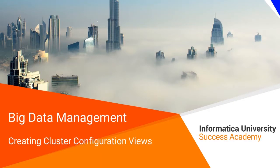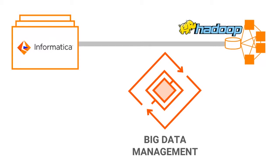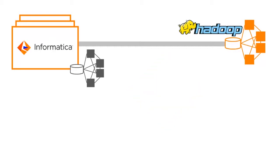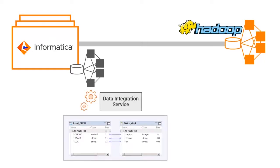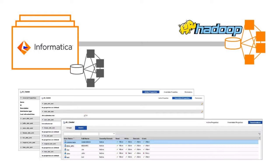Welcome to Cluster Configuration Views. You can integrate the Informatica domain with the Hadoop cluster through Big Data Management. A cluster configuration is an object in the domain that contains configuration information about the Hadoop cluster. The cluster configuration enables the data integration service to push mapping logic to the Hadoop environment, and displays different components which can be accessed in different views.